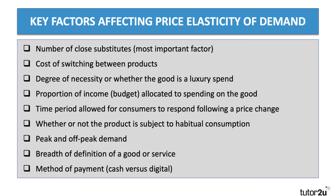The breadth of definition of a good or service is worth mentioning. If a good is broadly defined — for example demand for petrol, meat, milk, or painkillers — demand is often quite price inelastic because you need some petrol for the car or painkillers for a migraine. However, individual brands of petrol, beef, or painkillers are likely to be more price elastic because there's competition within that purchase.